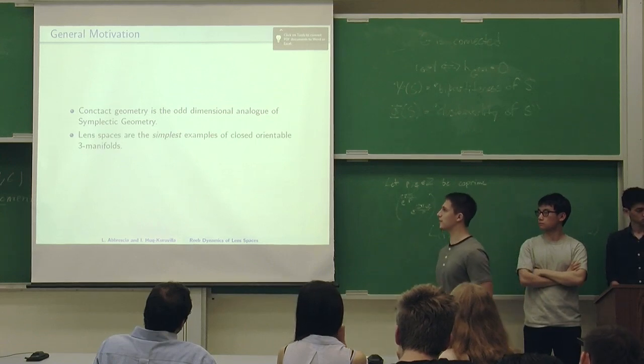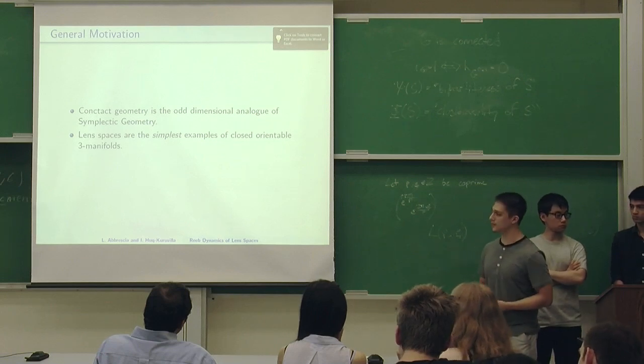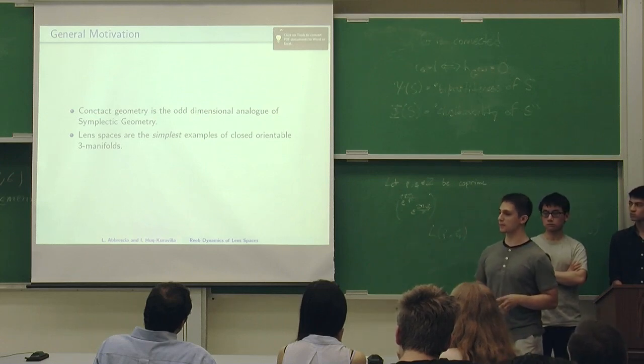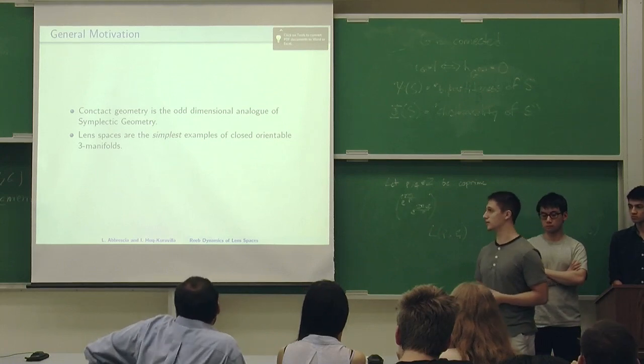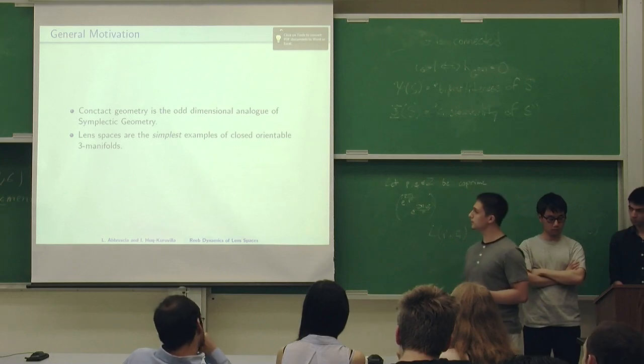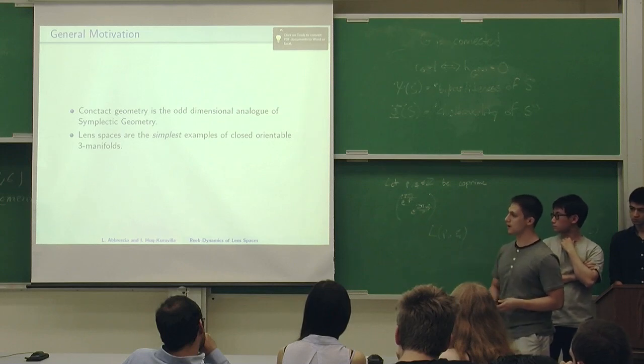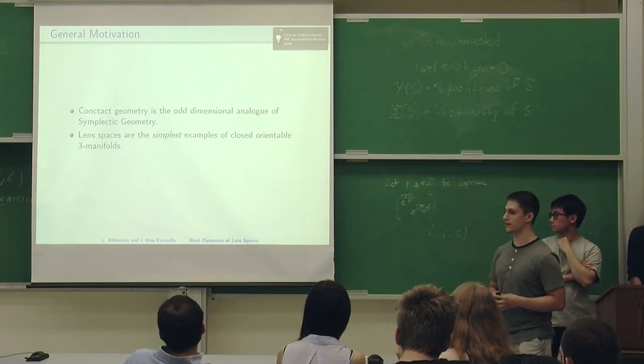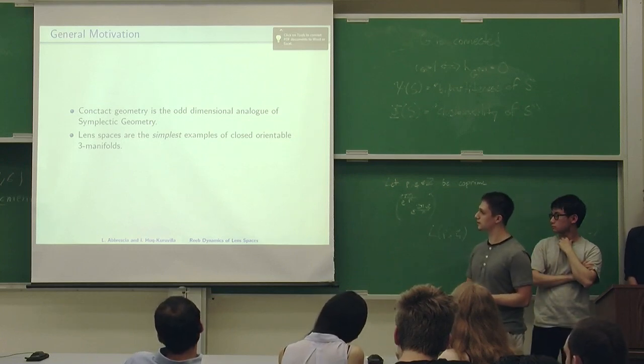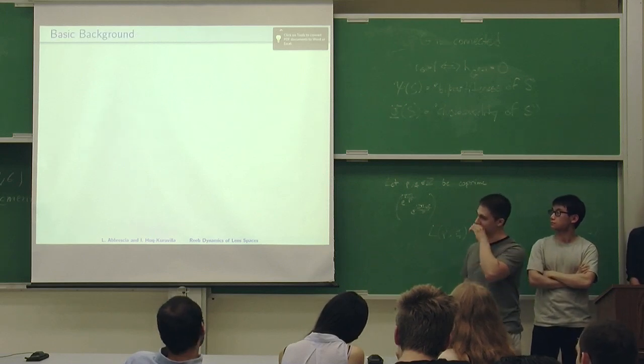The Hamiltonian vector field in physics is the analog of a Reeb vector field which we'll define later. Why do we care about lens spaces? These lens spaces are the simplest examples of closed orientable three manifolds. They're the first type of three manifolds that are not entirely described by their fundamental group and homotopy. L5-1 and L5-2 are not homeomorphic, but they do have isomorphic fundamental groups. Lens spaces are really nice objects to study.